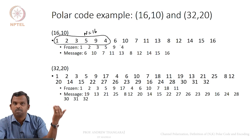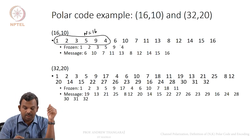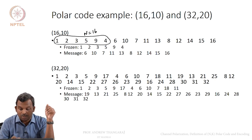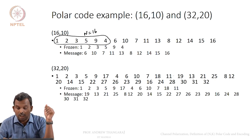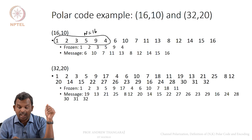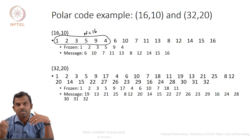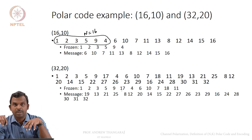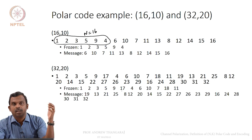The same process applies for N equals 32, K equals 20. You freeze the first 12 positions: 1, 2, 3, 4, 5, 6, 7, 9, 10, 11, 17, and 18 are frozen to 0. The remaining positions carry the message bits. You can combine and create a generator matrix — you look at the non-frozen positions in U and the corresponding rows of G_N to get the generator matrix for the polar code.